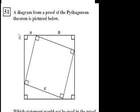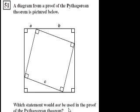We're on problem 51. They say a diagram from a proof of the Pythagorean theorem is pictured below. Which statement would not be used in the proof of the Pythagorean theorem?